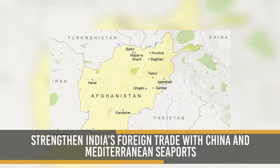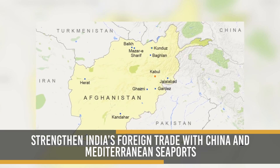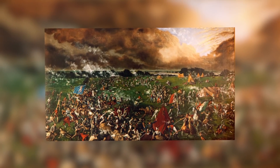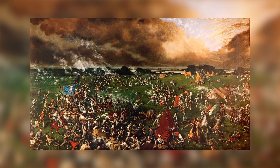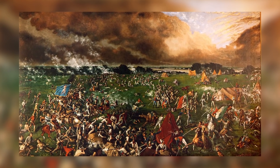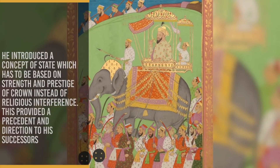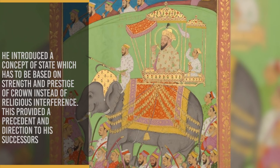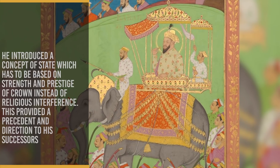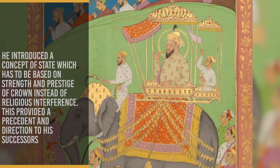The conquest of Kabul and Kandahar helped to strengthen India's foreign trade with China and Mediterranean seaports. His war tactics were very expensive since he used heavy artillery, which ended the era of small kingdoms. He introduced a concept of state which had to be based on the strength and prestige of the crown instead of religious interference. This provided a precedent and direction to his successors.